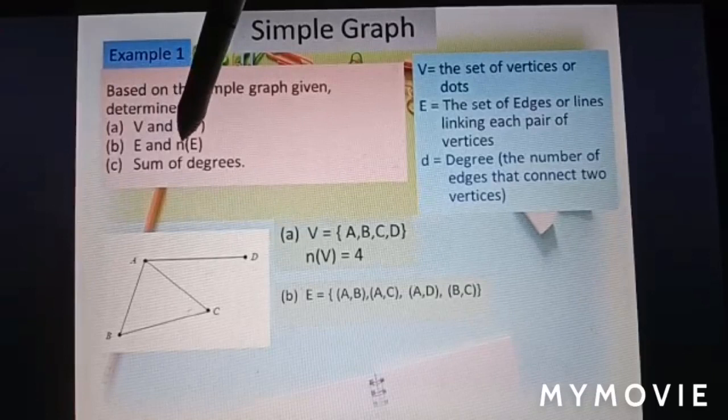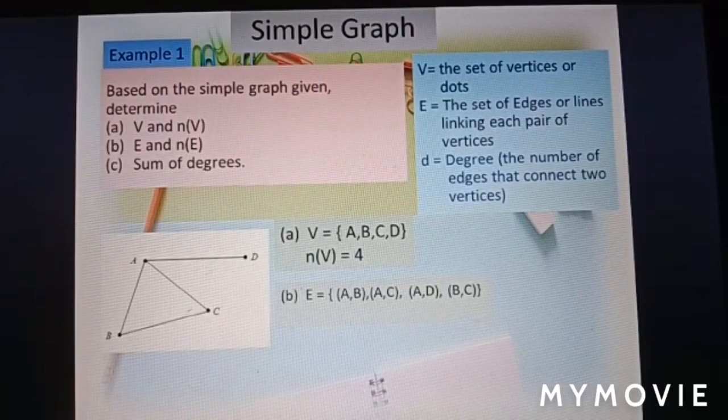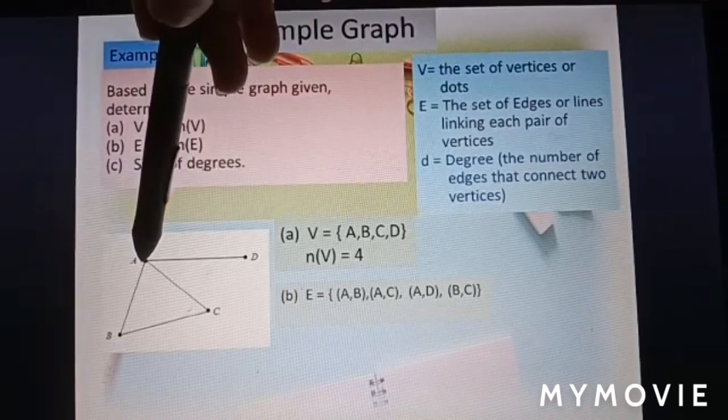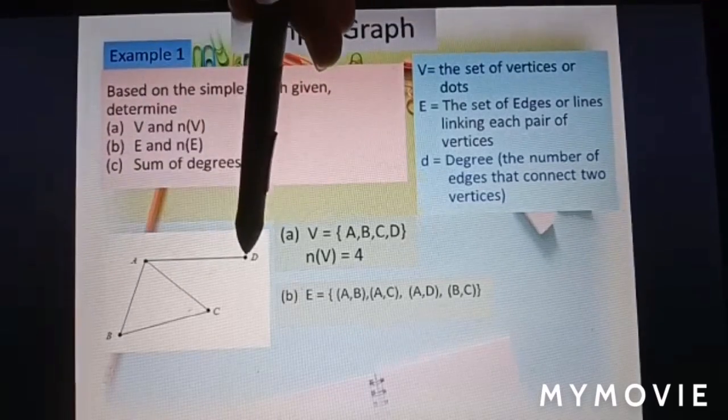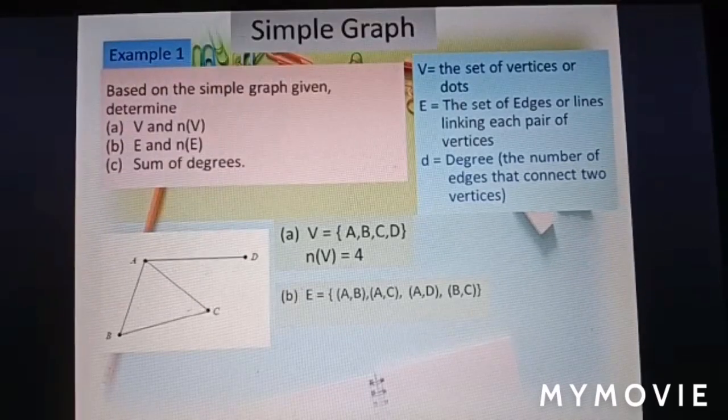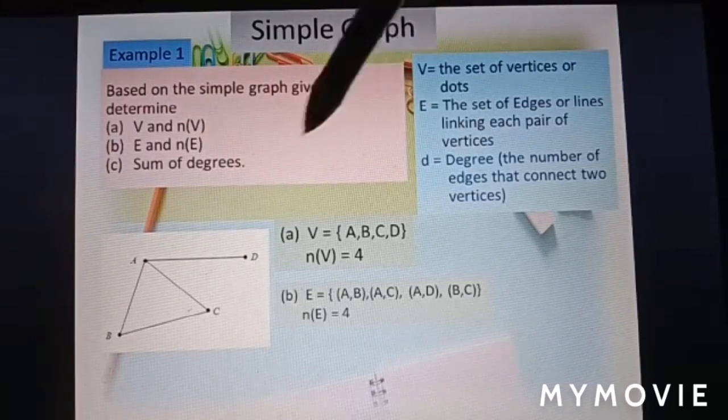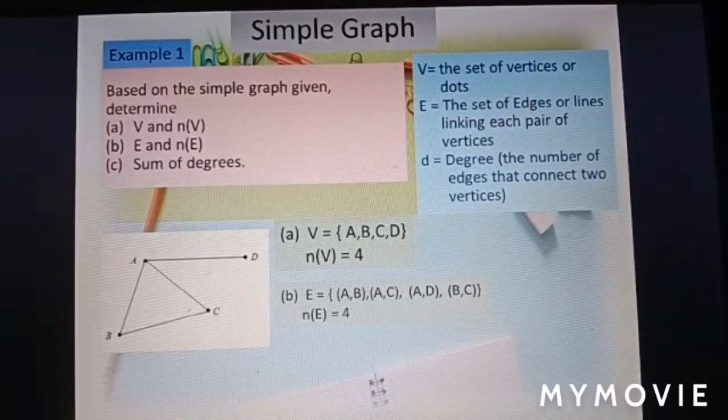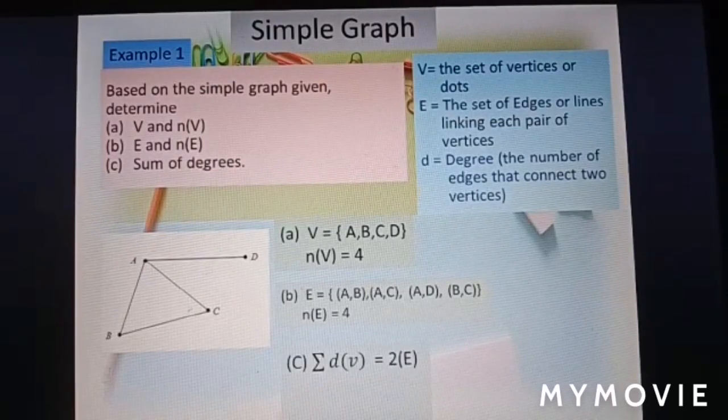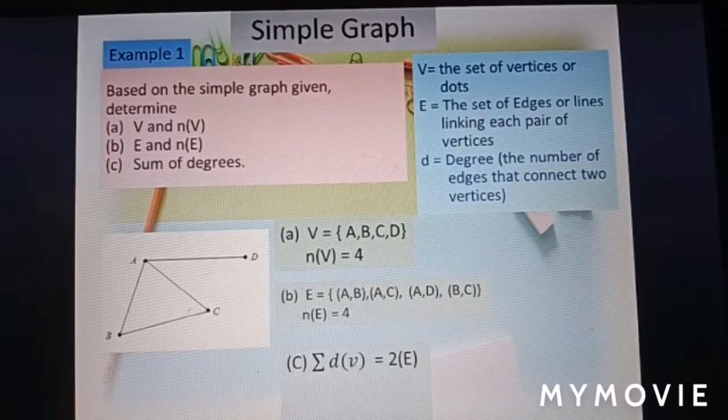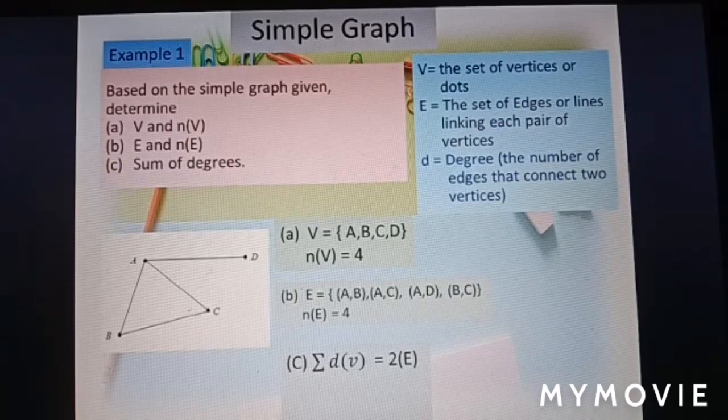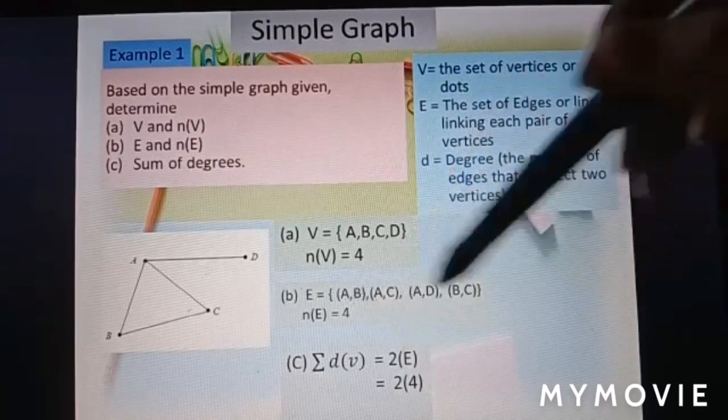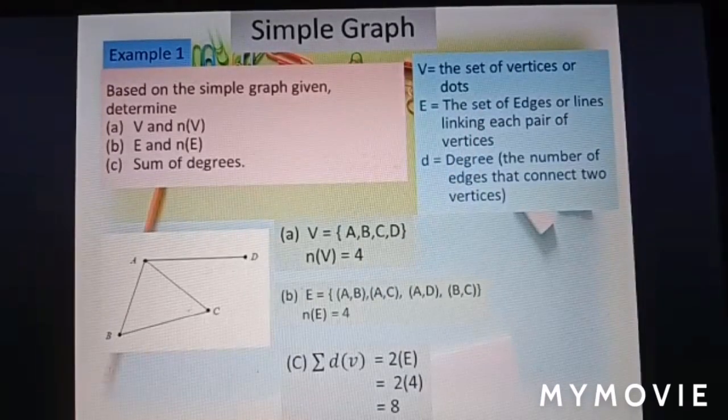B, E and number of E. Set of edges we have AB, AC, AD, and BC. Number of edges we have 1, 2, 3, 4. Sum of degree is twice of number of edges. So now number of edges is 4. So 2 times 4 equal to 8.